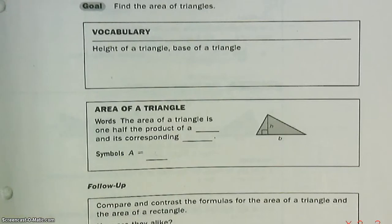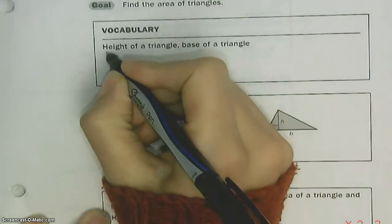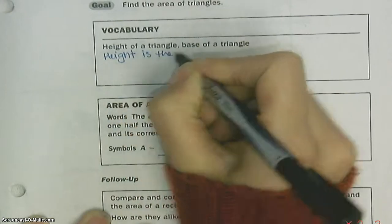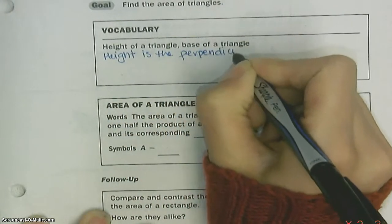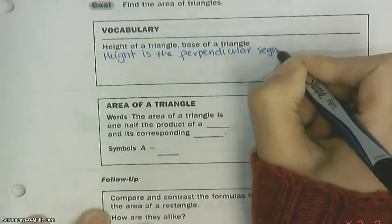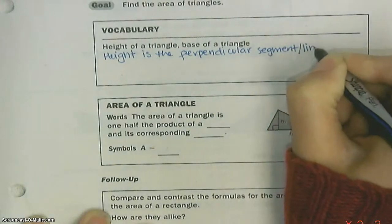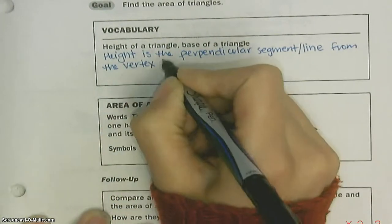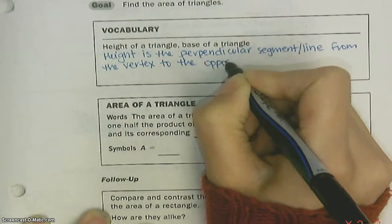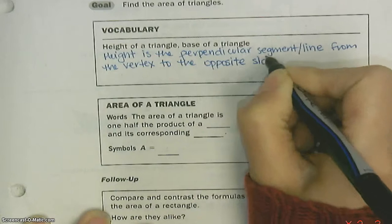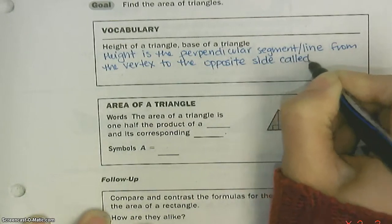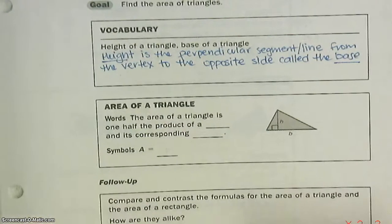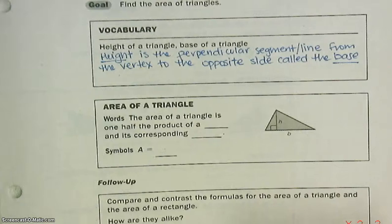When you're finding the area of a triangle, it's important that you can find the height and the base. The height is the perpendicular segment — and if you have a perpendicular, it means 90 degrees — or line from the vertex to the opposite side, which is called the base.